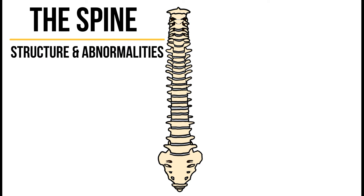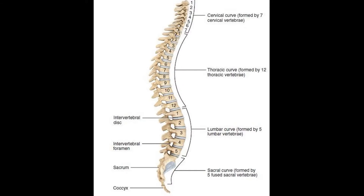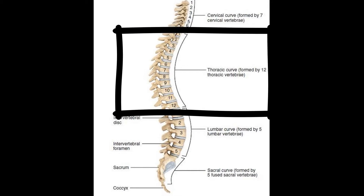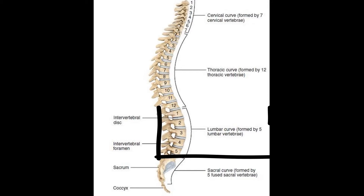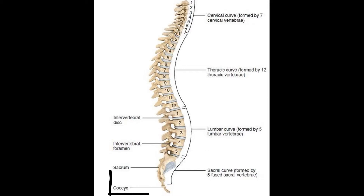Hey guys, it's Leila. Today we'll speak about the vertebral column. You have 33 individual bones: 7 cervical, 12 thoracic, 5 lumbar, 5 sacral, and 4 coccygeal.